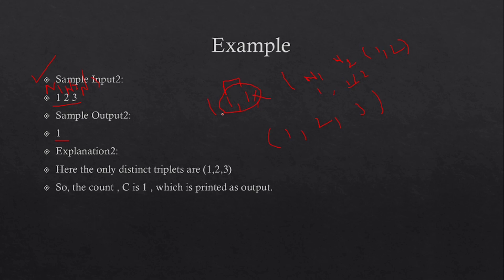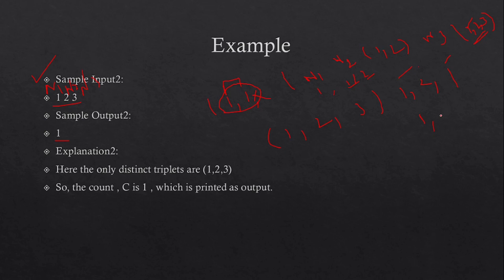You cannot take the same size shoes. For n3 you can take 1, 2, or 3, but given the constraints the only valid triplet is 1,2,3. That's why your answer is 1 — only one triplet is possible.